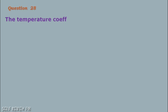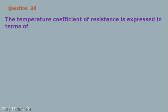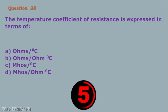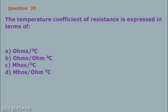Question number 28: The temperature coefficient of resistance is expressed in terms of: A. Ohms per degree C B. Ohms per ohm per degree C C. Mhos per degree C D. Mhos per degree C. The correct answer is letter B, ohms per ohm per degree C.